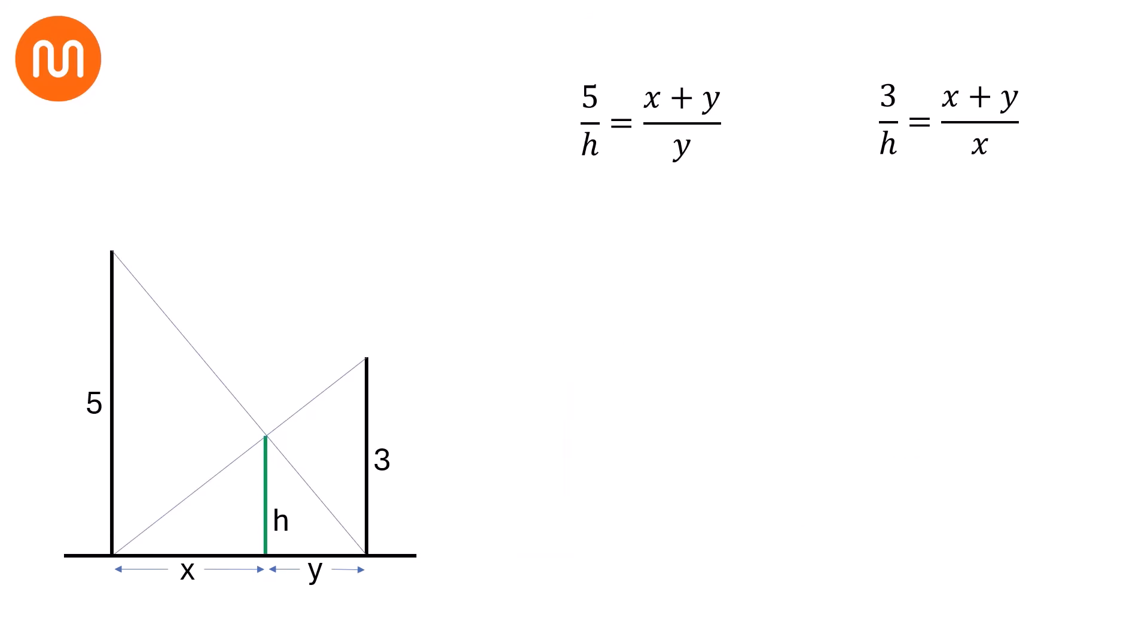Now, exchanging 5 and y, first equation can be written as y over h is equal to x plus y over 5. Similarly, we can write second equation as x over h is equal to x plus y over 3.